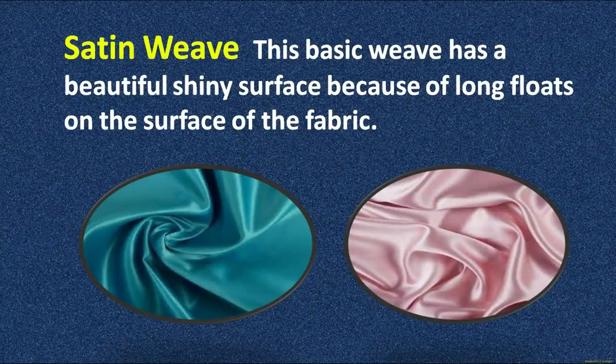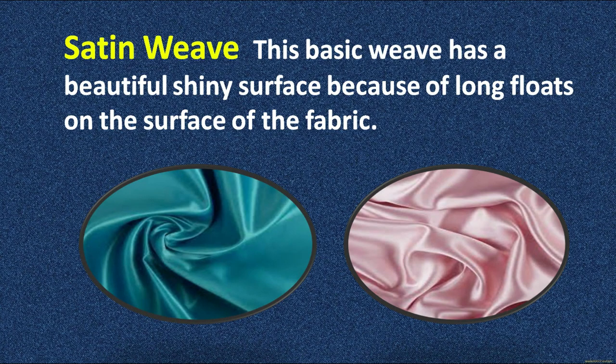Now let us discuss satin weave. You must have seen a very shiny surface article that we wear when going to a party. That is a satin weave. Some household decorative articles are also made up of satin. This basic weave has a beautiful shiny surface because of long floats on the surface of the fabric. As you can see in the picture, the surface looks very shiny and gives a very sheen finish.